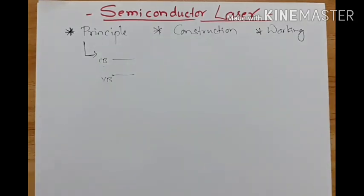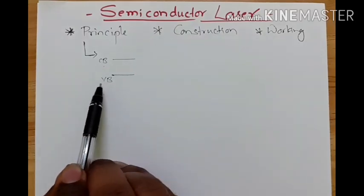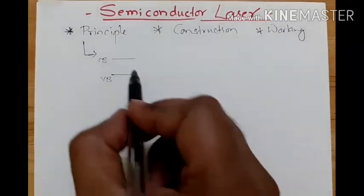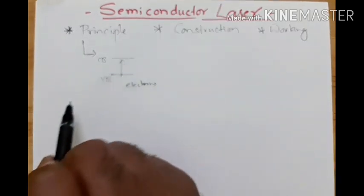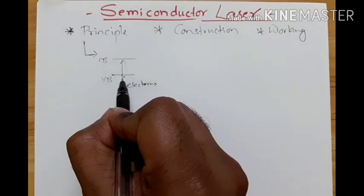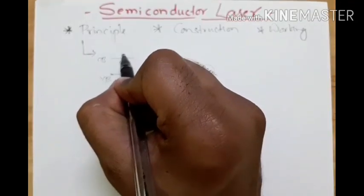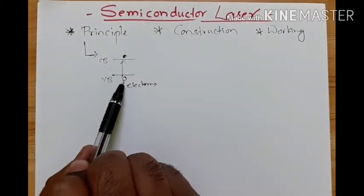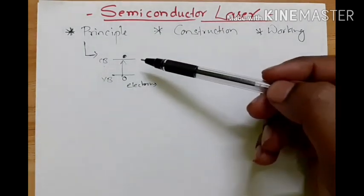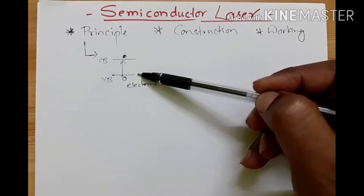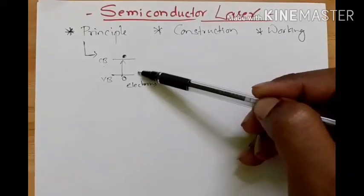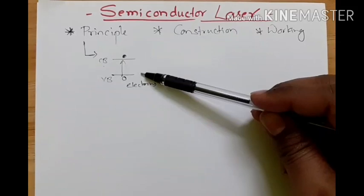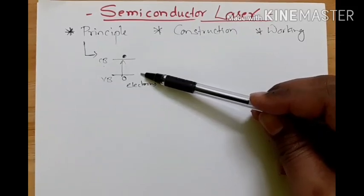When we apply voltage or supply energy — what we call pumping — the valence electrons go to the conduction band and become conduction electrons, leaving behind holes. The basic principle is that at a certain condition, population inversion is built between the conduction band and the valence band — meaning there will be more number of electrons and more number of holes.